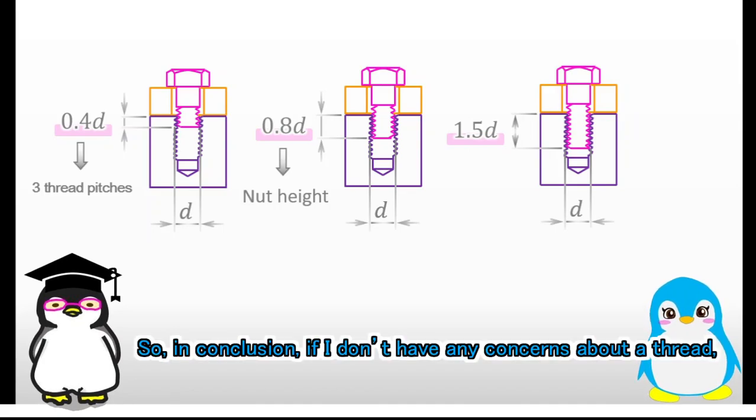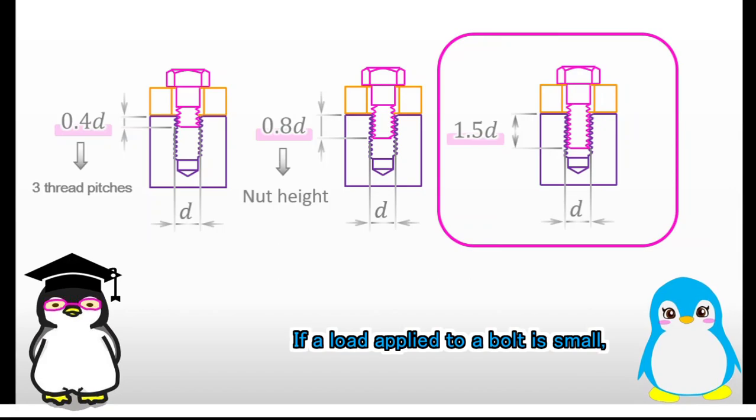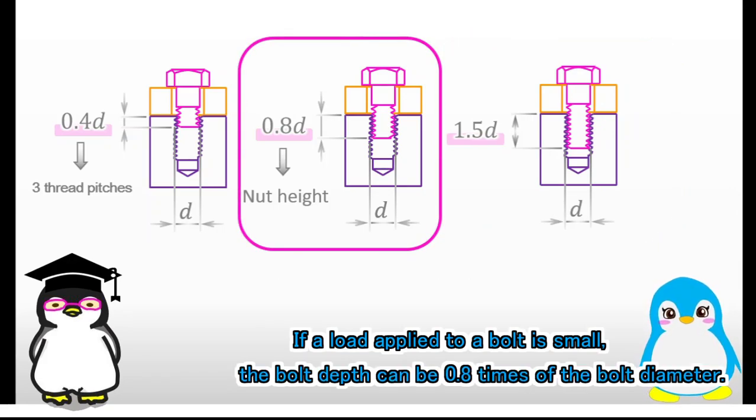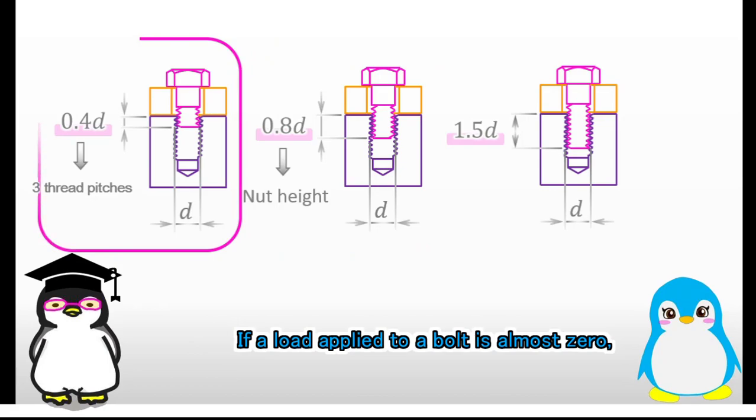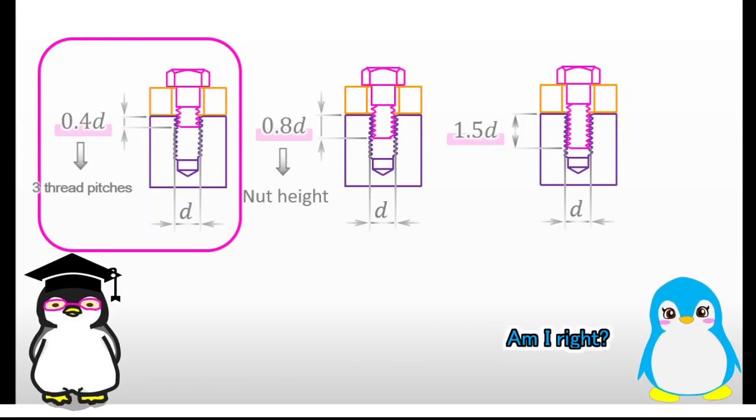So in conclusion, if I don't have any concerns about a thread, the bolt depth should be at least 1.5 times longer than the bolt diameter. If a load applied to a bolt is small, the bolt depth can be 0.8 times of the bolt diameter. If a load applied to a bolt is almost zero, the bolt depth can be 3 thread pitches. Am I right?